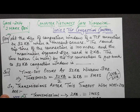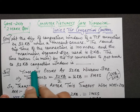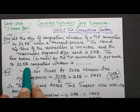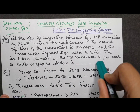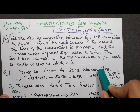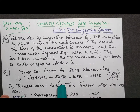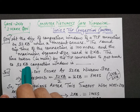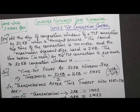The question asks for the time taken by the TCP connection to get back to a 32 KB congestion window — that is, 16 MSS. That's what we need to find. Let's start with the solution.